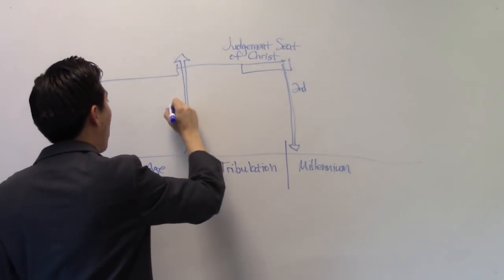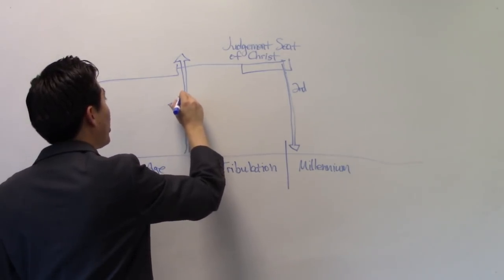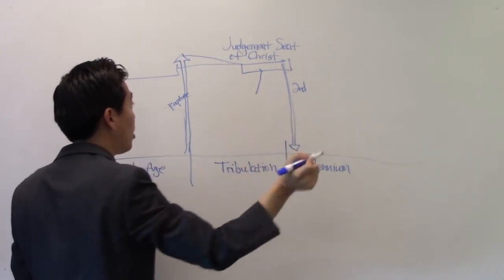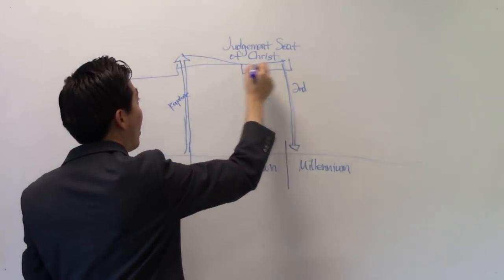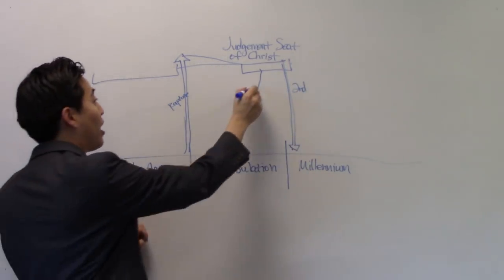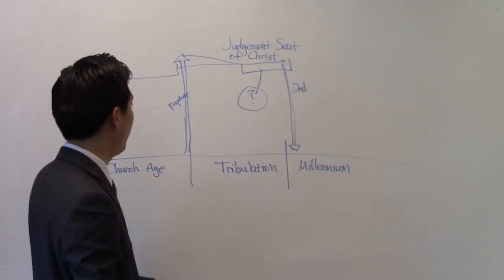In our rapture here, before the tribulation, that's when the judgment seat of Christ starts. And then this event, which I'll tell you later what it is. And then after this event, then we come down second advent. Now, I'm going to show you verses that will show it.